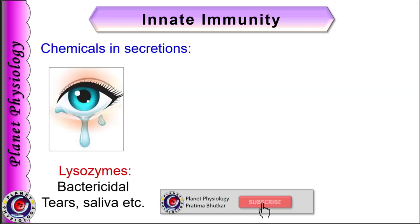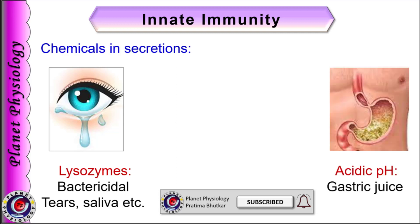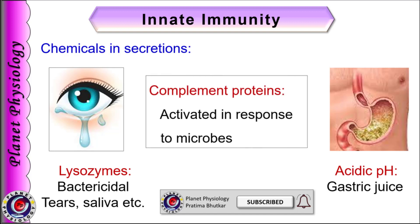Coming to the innate immunity provided by the chemicals in the body: secretions like tears and saliva contain lysozymes which are bactericidal in nature. If the microbes succeed to reach the stomach, they are killed by the highly acidic gastric juice. Plasma contains various complement proteins which are activated by antigens entering the blood. Complement proteins kill these antigens by various mechanisms. These different mechanisms exist in our body since birth and protect us from various diseases — all these mechanisms form innate immunity.